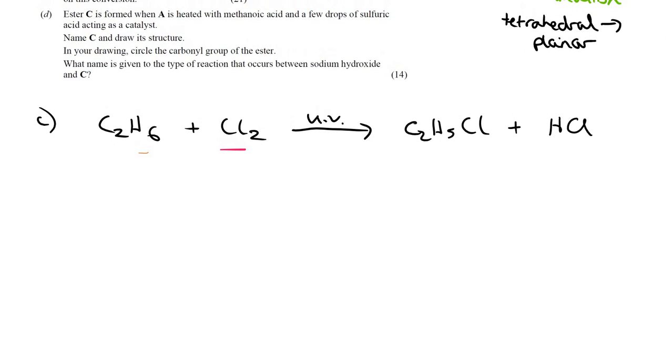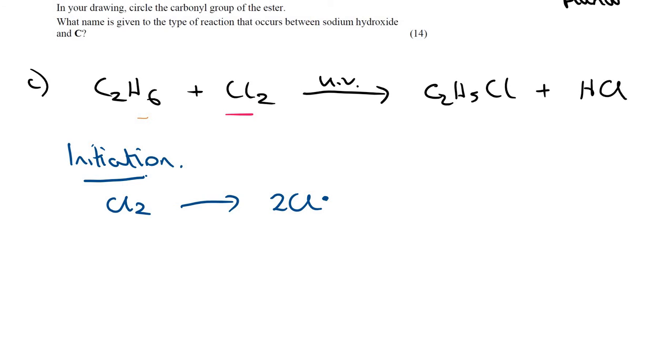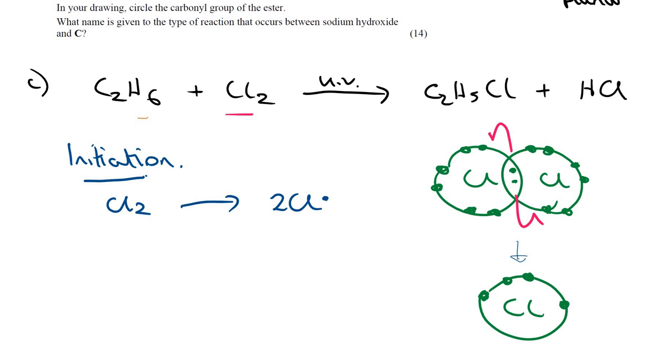We have an initiation step to begin with, and this is where the UV light homolytically breaks apart the chlorine molecule. So Cl2 just breaks into two chlorine radicals. I'm drawing the dot and cross diagram for each of the chlorine atoms when they're covalently bonded. The UV light breaks apart the shared pair, and each of the electrons just goes straight back onto the chlorine atoms. You're left with two chlorine atoms, so you form two of those.